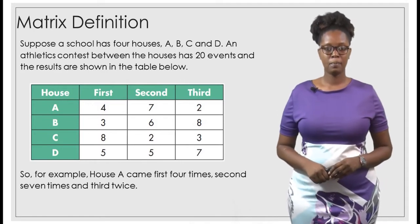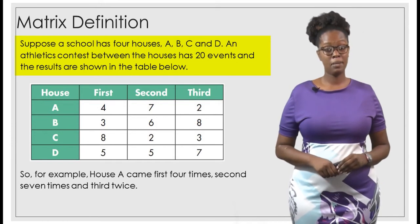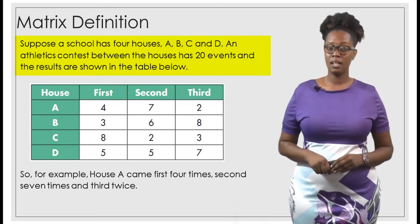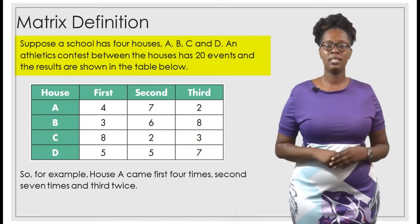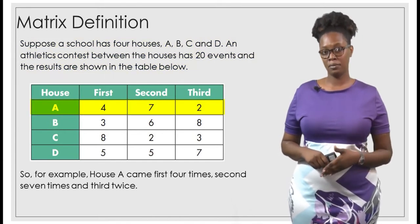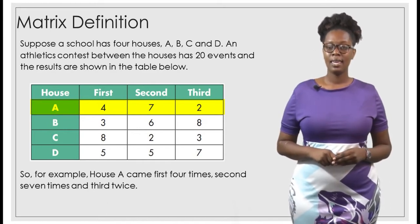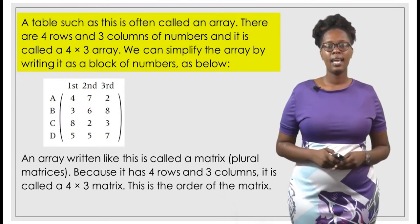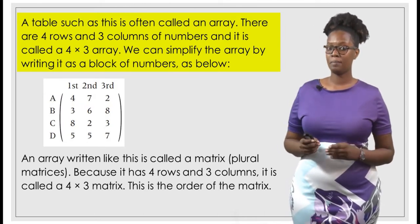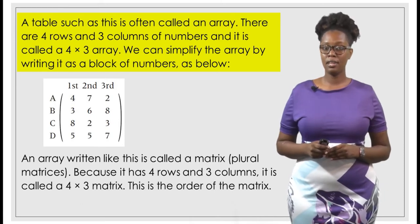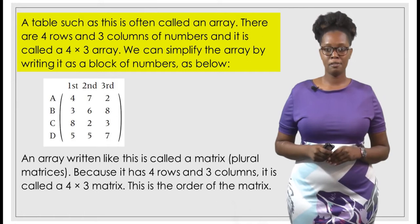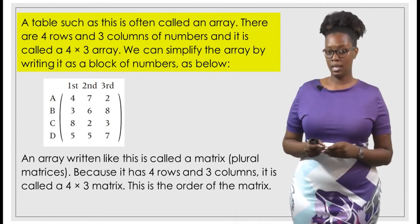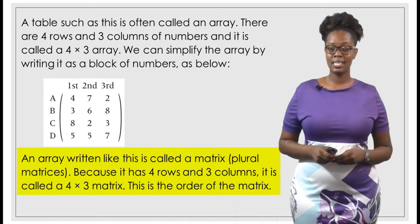Matrix definition. Suppose a school has four houses: house A, B, C, and D. An athletics contest between the houses has 20 events, and the results are shown in the table below. We have the number of first, second, and third place finishes. For example, house A came first four times, second seven times, and third twice. A table such as this is often called an array. There are four rows and three columns of numbers, and it is called a four by three array. We can simplify the array by writing it as a block of numbers. An array written like this is called a matrix.